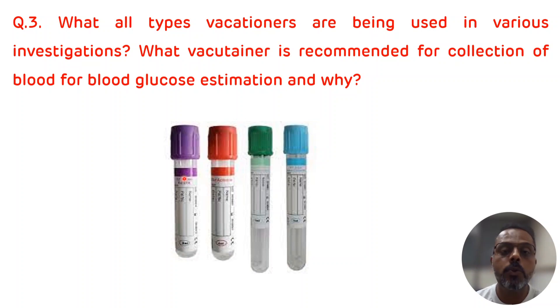First vacutainer is an EDTA tube. It is used for the estimation of CBC and estimation of glycated hemoglobin. Second tube is the red color tube which is a serum tube and it is used for all major biochemistry tests as well as for the serology test. Third tube is the green color tube which is a heparin tube. It is used for the electrolyte estimation as well as for the ABG, that is arterial blood gas analysis. And the fourth one is the sodium citrate tube which is used for various coagulation studies.